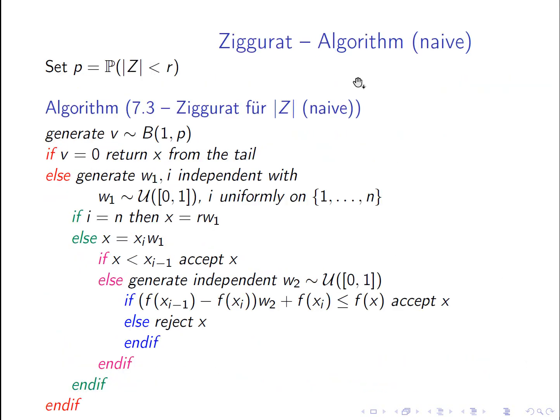Okay, so let's finish today with a bit of pseudocode. So this is a pseudocode algorithm for a naive implementation of the Ziggurat method, for sampling the absolute value of that. So what you see here, we have one, two, three, four ifs, so it's not overly complicated.